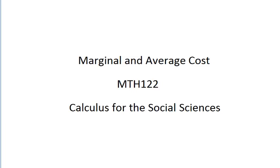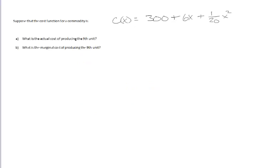Here in this video we're going to look at marginal and average cost. In this first example, suppose that the cost function of a commodity is c(x) = 300 + 6x + (1/20)x². The first question is: what is the actual cost of producing the 9th unit? And the second question is: what is the marginal cost of producing the 9th unit?